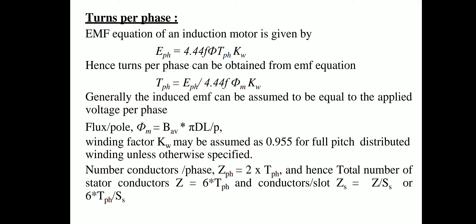Number of conductors per phase Zph = 2 × Tph. Total number of stator conductors Z = 6 × Tph. Conductors per slot: Zs = Z / Ss = 6 × Tph / Ss.